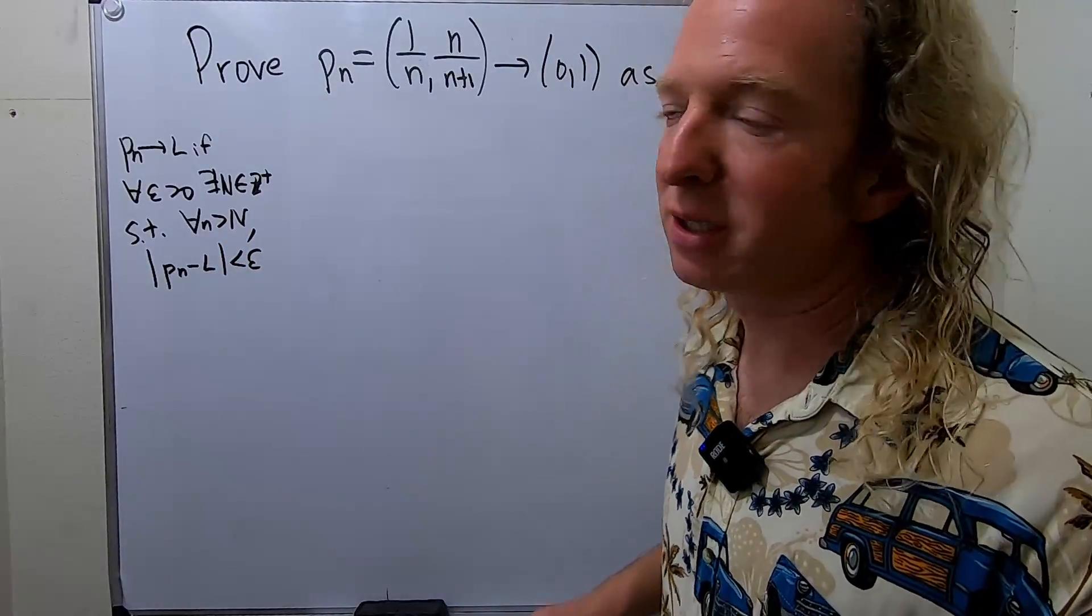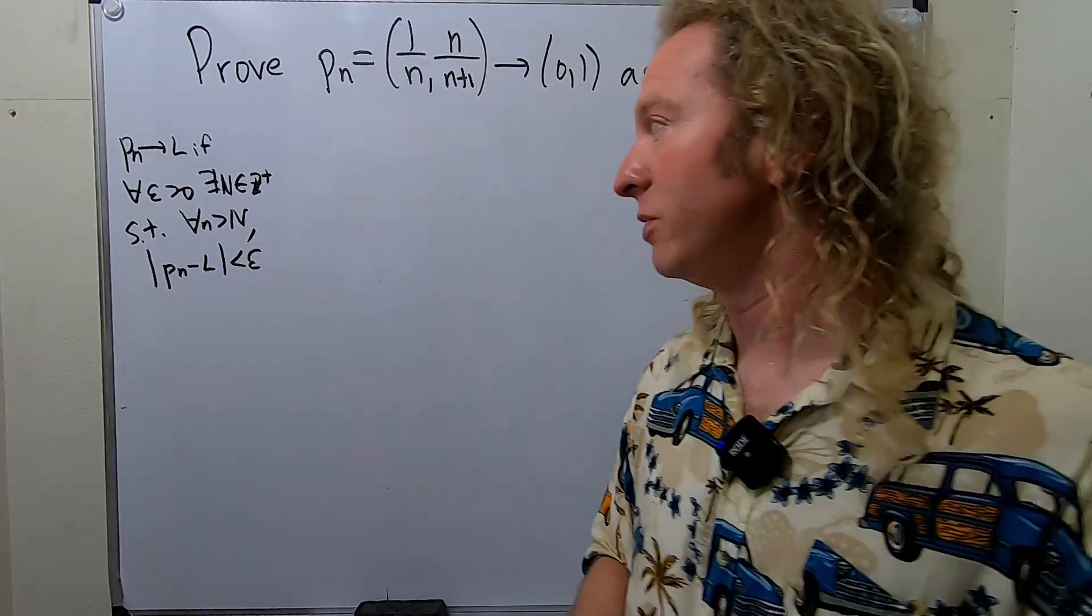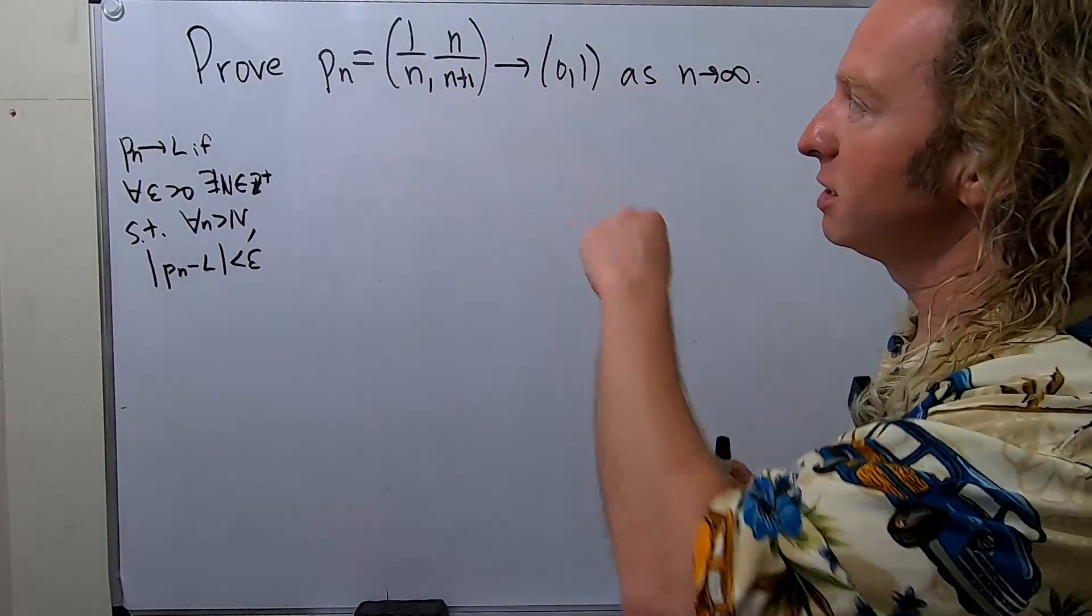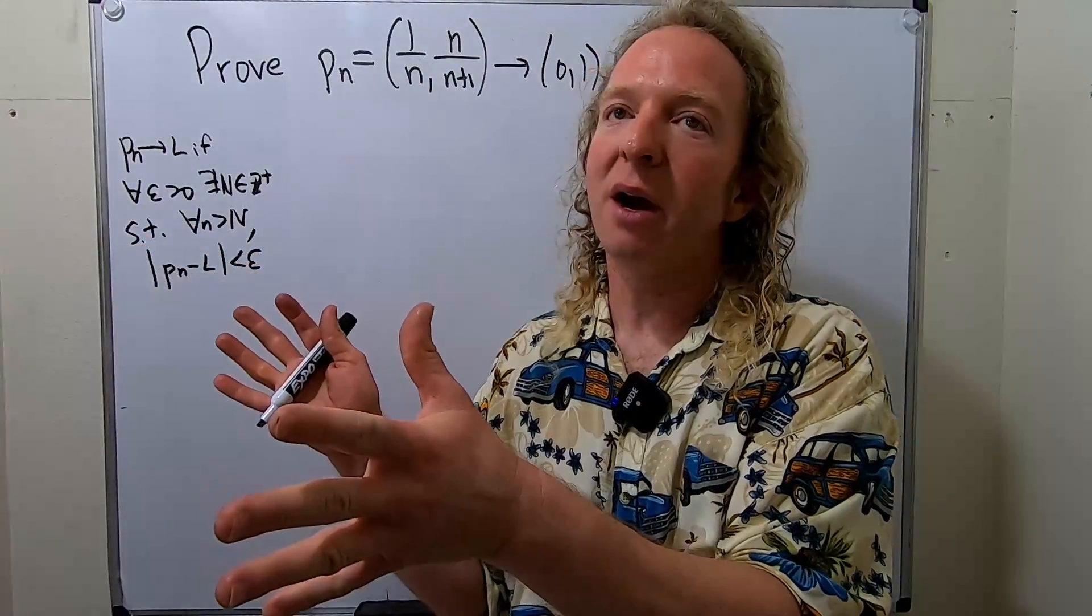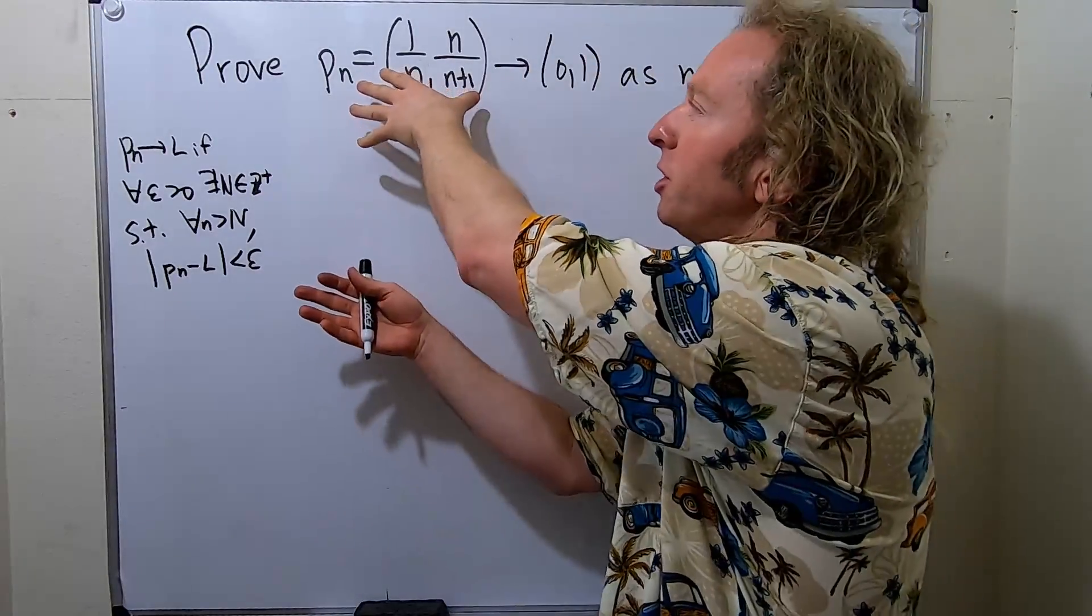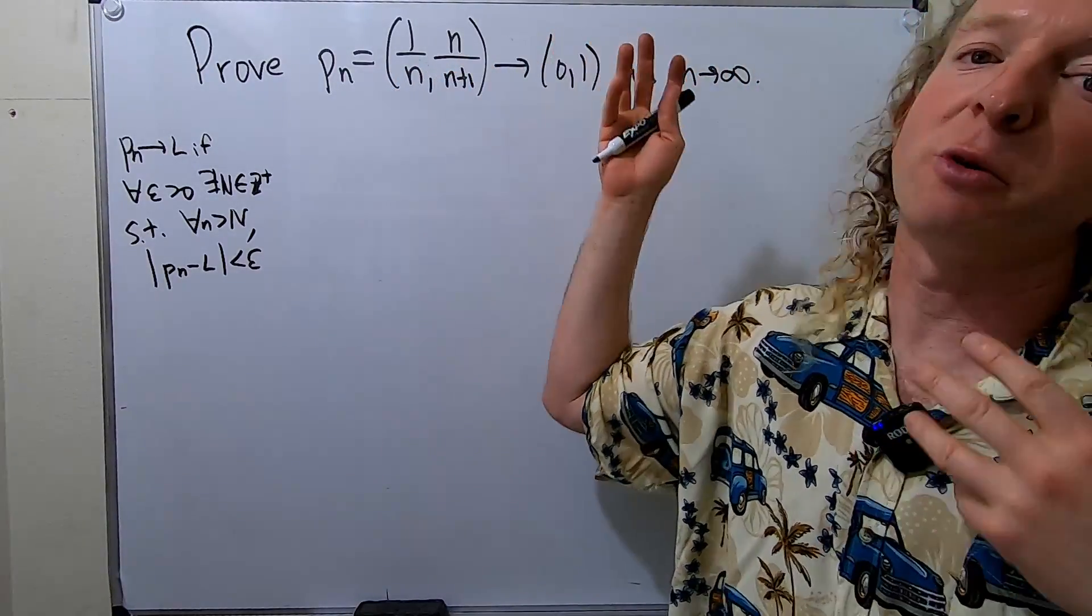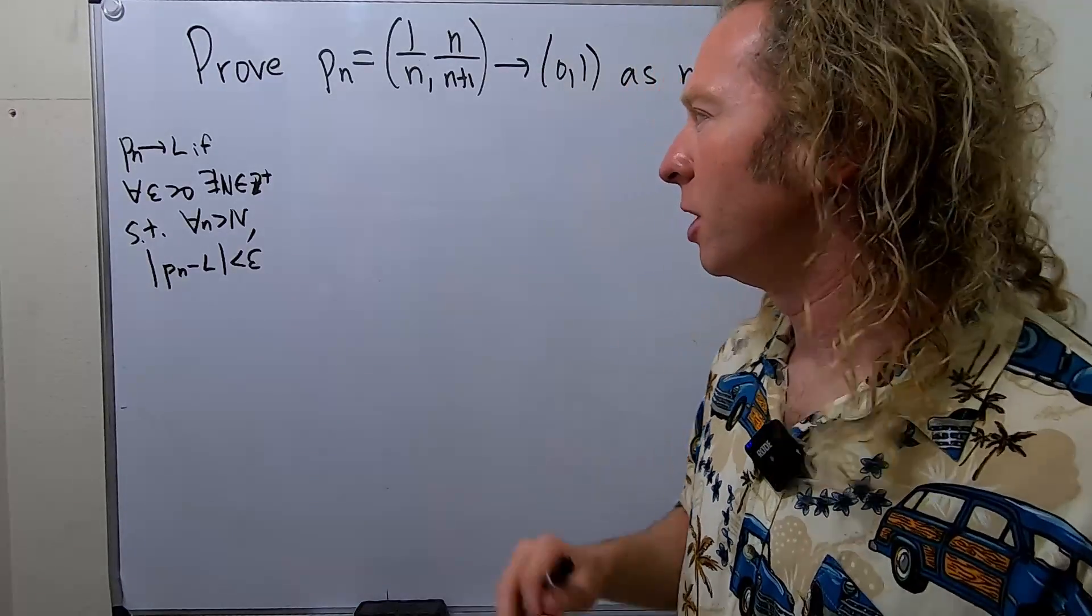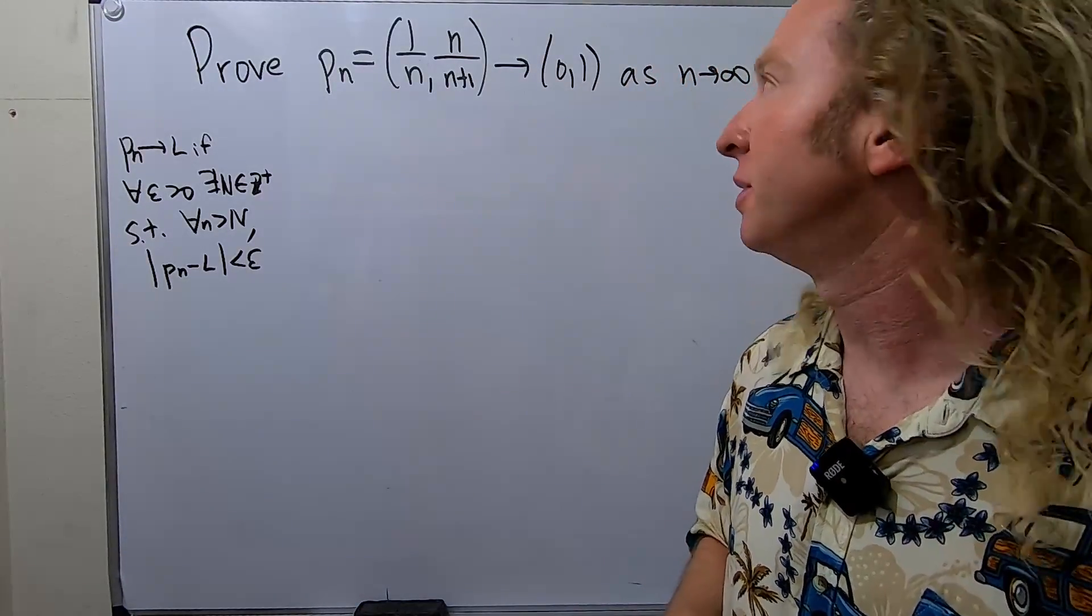The distance between P_n and L can be made arbitrarily small, smaller than epsilon. Here our distance function is the Euclidean distance. It's the same definition as you would have if you had sequences of real numbers. Here we have a sequence of ordered pairs, that's the only difference. The proofs are a little bit more complicated but not too bad.